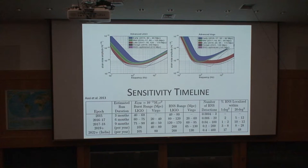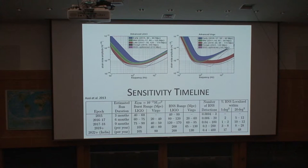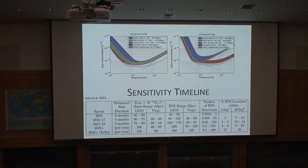Looking at the next few years: we had a limited sensitivity compared to where we're going to be within three years, and we had a very limited timeframe — we only observed for three months. If I multiply what we had — roughly one event — by four, which is how much longer we're going to observe per year, and multiply by three cubed, which accounts for the volume improvement, that's a lot of events. So look forward to more of these.